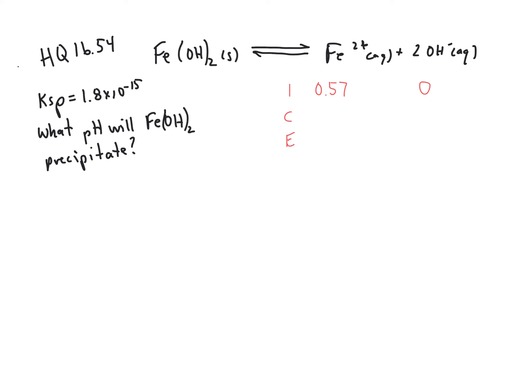In this ICE chart, we can ignore the change in concentration of Fe²⁺, because our initial concentration is going to be so much larger than our change in concentration. So we can basically just say a negligible change, and then equilibrium will have 0.57 molar Fe²⁺.